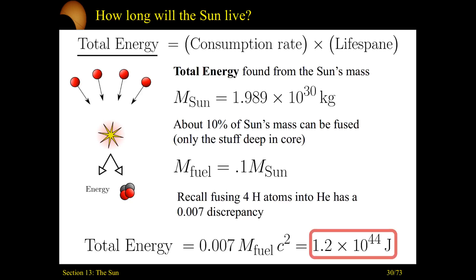So recall that when fusing four hydrogen atoms into helium, there's that 007 discrepancy in mass. So the total energy of the sun is just going to be 0.007, the discrepancy from four hydrogens to one helium, times the amount of fuel on the sun, the 10% of the sun's mass that will actually be fusible, into E equals mc squared, speed of light squared. So the sun's total energy is 1.2 times 10 to the 44th joules.